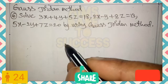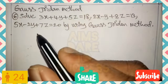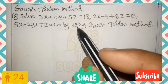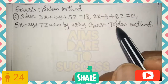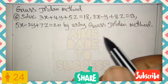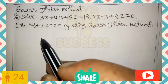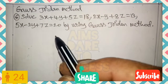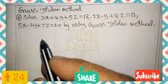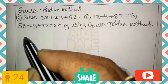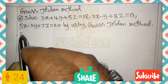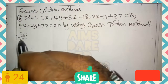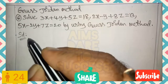We will solve the system of equations using the Gauss-Jordan method: 3x + 4y + 5z = 18, 2x - y + 8z = 13, and 5x - 2y + 7z = 20. This is a very important previous VIP question.